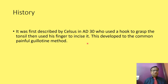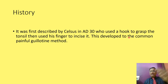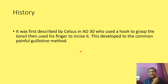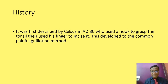Going into the history, it was first described by Celsius in AD 30, who used a hook to grasp the tonsil and then used his finger to incise it. This developed the common painful guillotine method — this was the starting point.